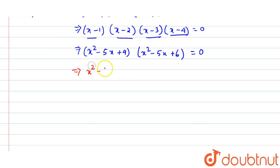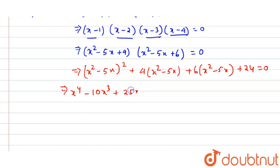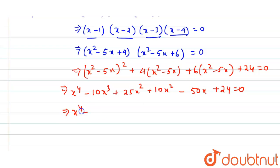Now we multiply these two quadratics together: (x² minus 5x plus 4)(x² minus 5x plus 6), which expands to give x to the power 4 plus ax³ plus bx² minus 5x plus 24 equals to 0.